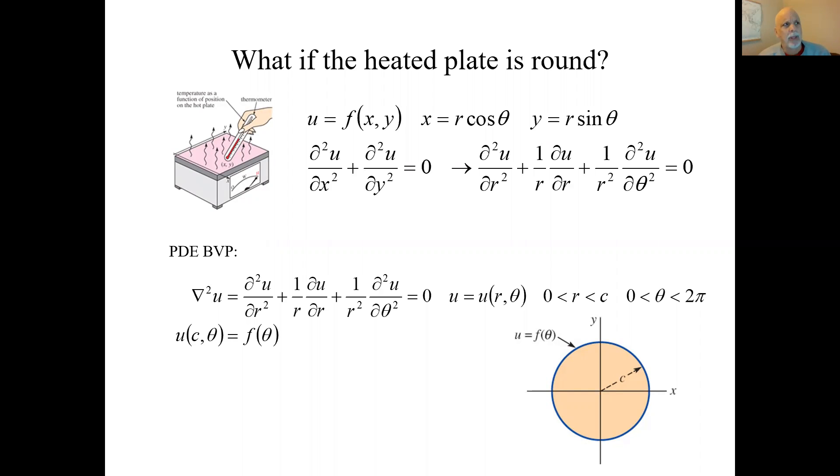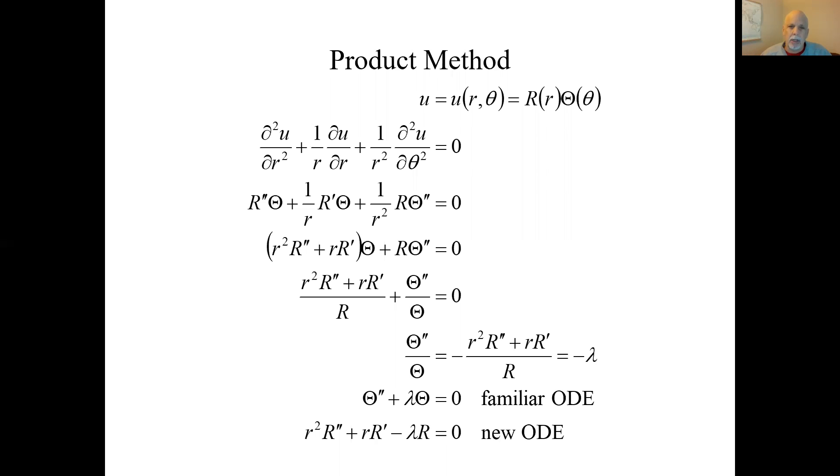We did the round heated plate in the previous recording, a partial differential equation boundary value problem in cylindrical coordinates. We converted a Laplacian equation in rectangular coordinates to polar coordinates in R and theta. When we did that, we did the product method, separated variables, and we got these two ordinary differential equations.